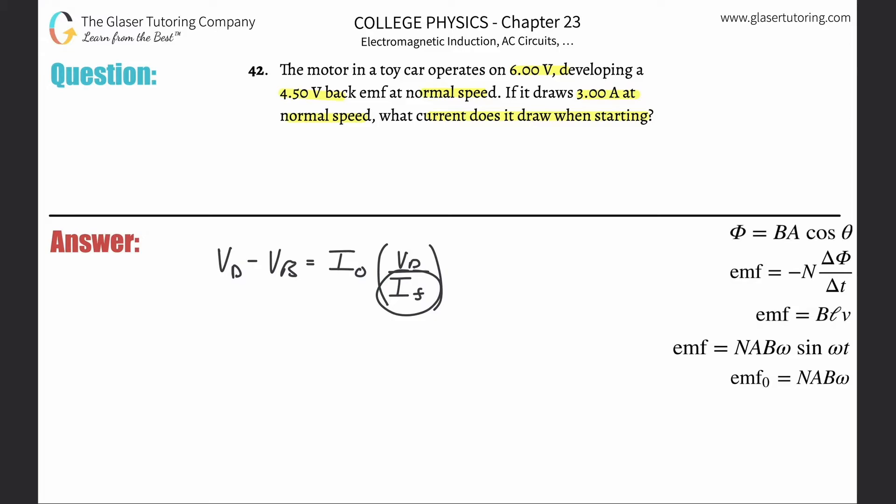We need to solve this for I sub f, and if you notice, we should have everything we need. So the driving voltage here was 6 volts, so this was 6 minus the back voltage which was 4.5. The current at normal operating speed was 3 amps they told us, so that's 3. The driving voltage again was 6, and that's divided by the initial or the current upon starting.